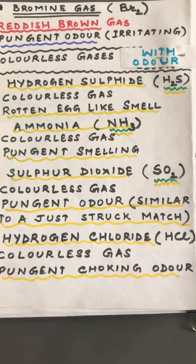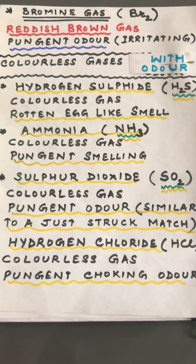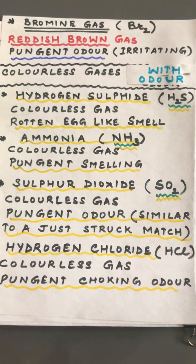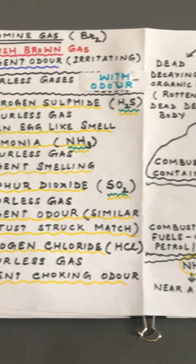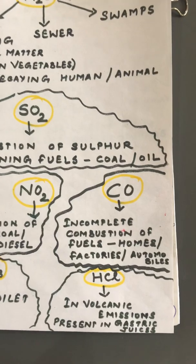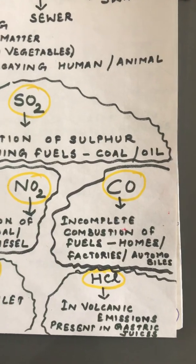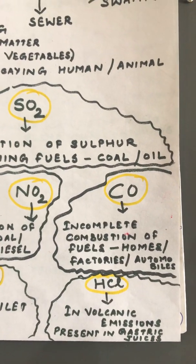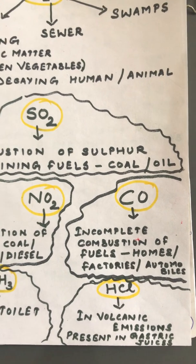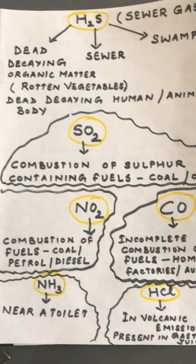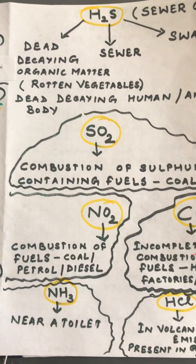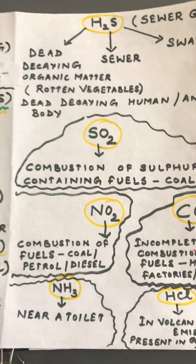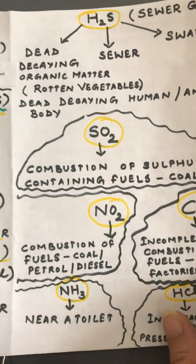Hydrogen chloride HCl is another colorless gas having a pungent, choking odor. It is commonly found in our body in the gastric juices in our stomach, and is also released during volcanic emissions. Nitrogen dioxide is produced during the combustion of fuels like coal, petrol, and diesel.